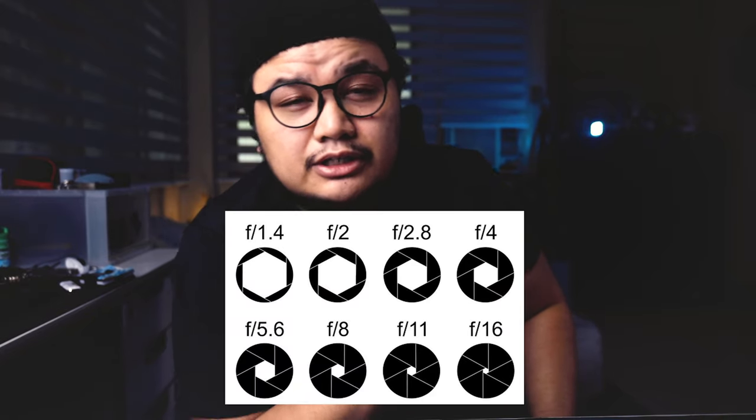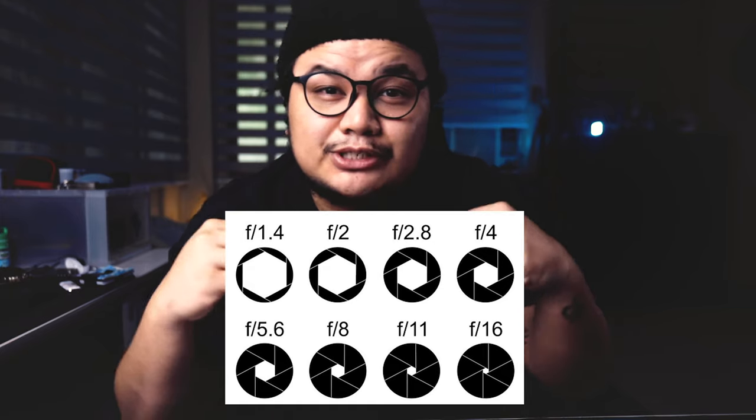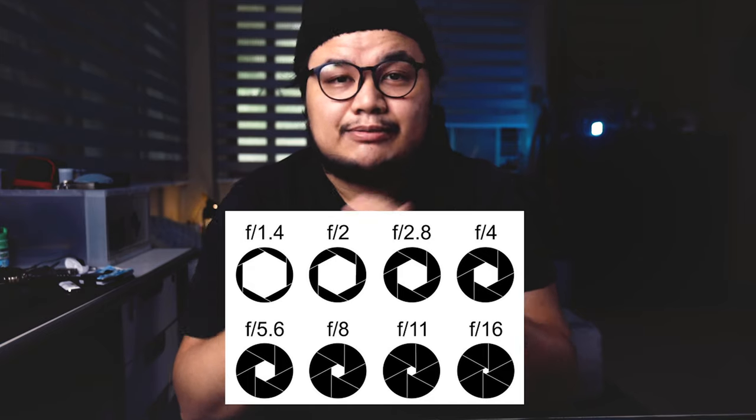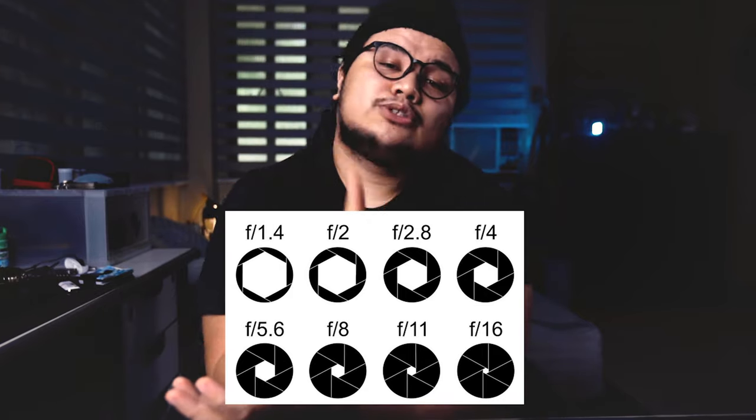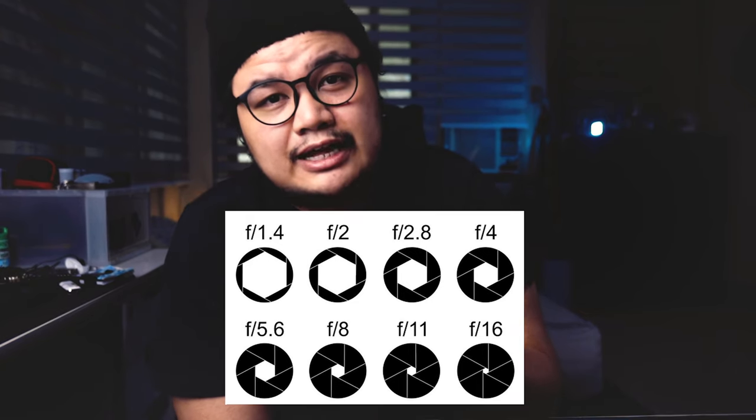Next is aperture. Aperture determines the depth of field of your images — whether you want your subject isolated and popping out, or a wider depth of field. Aperture is measured in f-stops. When buying lenses, you'll see something like 28–70mm f2.8 — that f2.8 is the aperture. The smaller the number, the wider your aperture, but the more shallow the depth of field. Depth of field ranges from f1.4. Some lenses have a constant aperture of 1.4, 1.8, 2, or 2.8, while some lenses have a variable aperture.